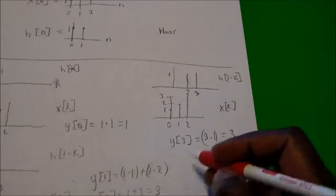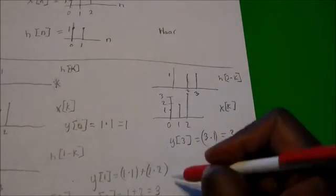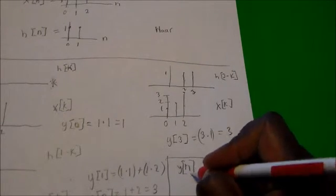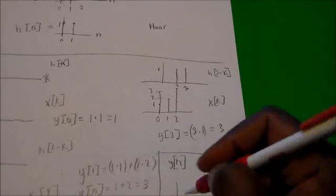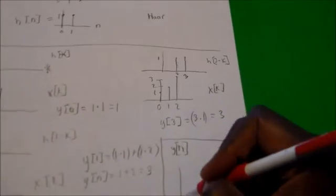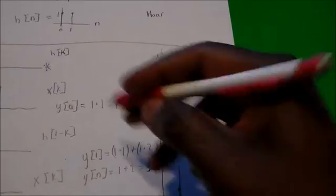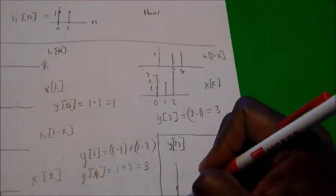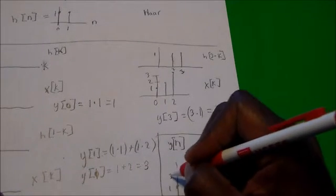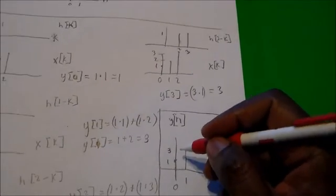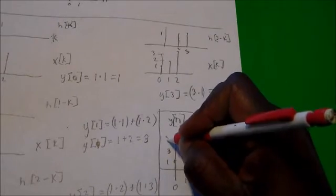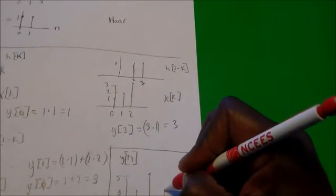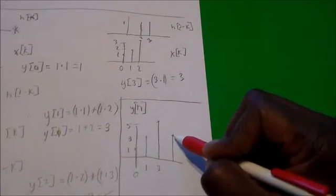Looking at the final result of the convolution: y of n gives us y of zero equals one, y of one equals three, y of two equals five, and y of three equals three. So the output signal is 1, 3, 5, 3.